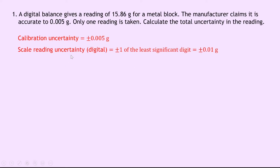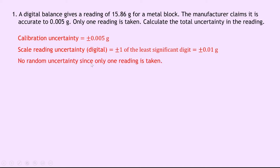The scale reading uncertainty in the digital scale we're using here is equal to plus or minus 1 of the least significant digit, which is equal to plus or minus 0.01 grams. We can see that if we look at this reading here, because the least accurate value is going to be when this 6 takes a value of 1, so this would be 0.01 grams. And lastly, there's no random uncertainty in this case since only one reading is taken. Because remember, a random uncertainty arises due to fluctuations in repeated measurements, but there's no repeated measurements here.